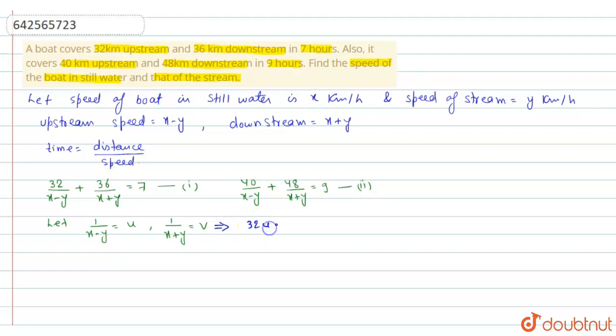That will be our equation number 3, and 40u plus 48v is equal to 9 will be our equation number 4.